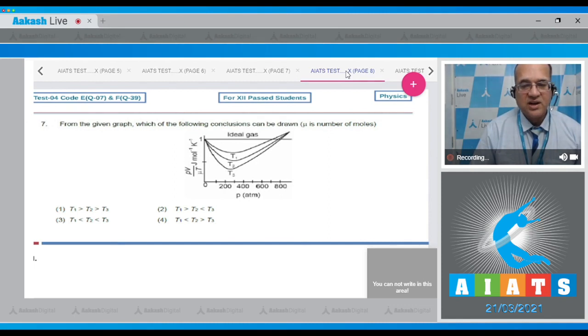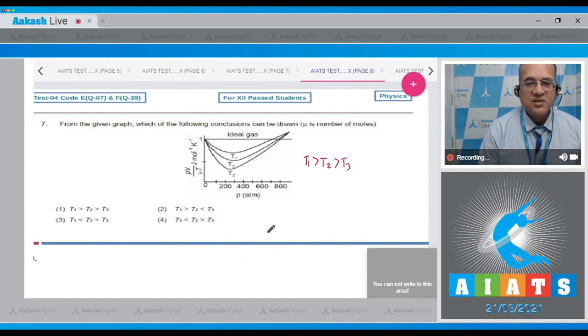As the temperature of the gas increases, the graph comes closer to the ideal gas. And T1 is higher than T2, then T3. So if I write the order, then T1 is greater than T2 is greater than T3. Let's look at the options. Option 1 is T1 greater than T2 greater than T3. Yes, that is true. So the answer to this question is option 1.